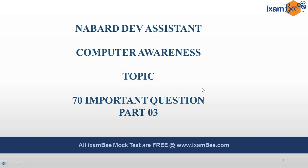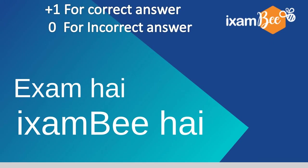What you have to do is attempt the questions and give yourself plus 1 for a correct answer and 0 for an incorrect answer. At the end of every question I will be displaying the answers, and at the end of all the questions I will be displaying the scoreboard to measure your performance in this test.